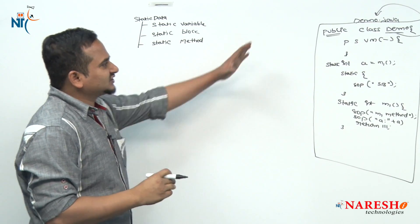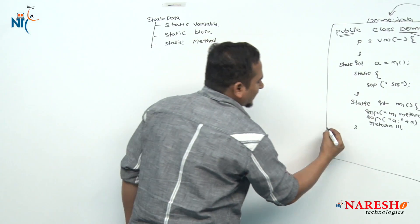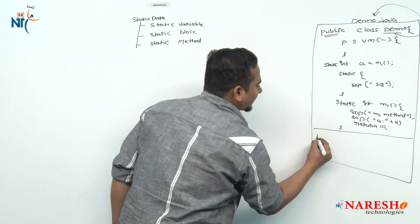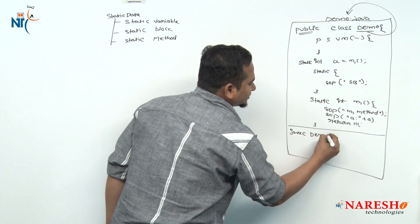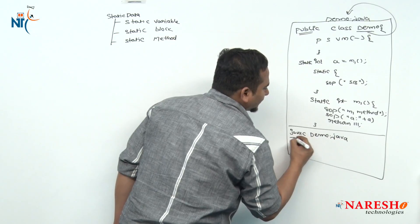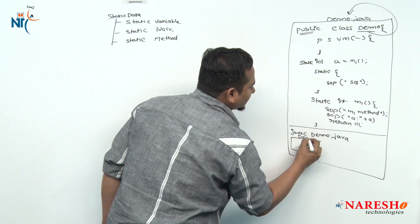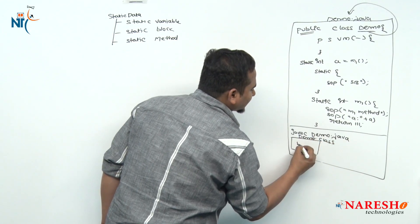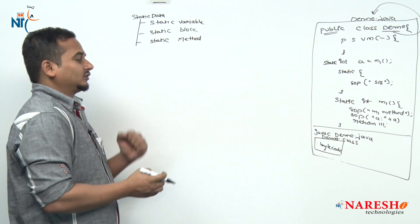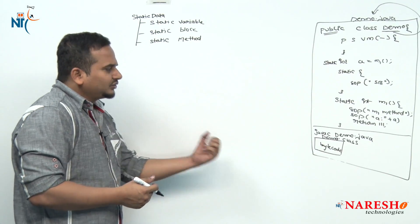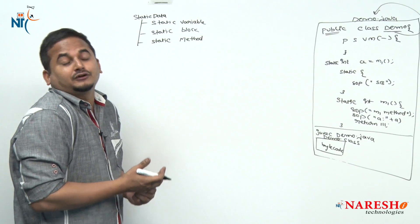My file name is Demo.java. How to compile this program? With the help of the development tool — javac Demo.java. Once we compile the program, we get one .class file, that is Demo.class. Demo.class contains bytecode. Now I am going to execute this program. How can we execute this program? With the help of the java command.